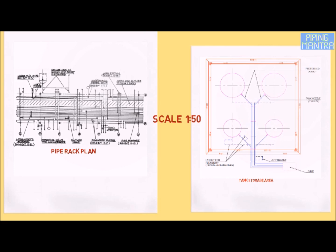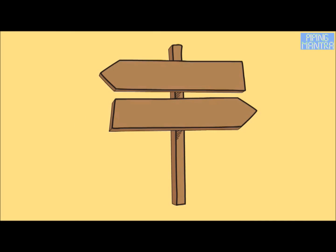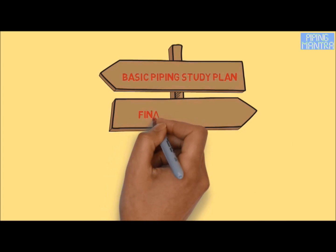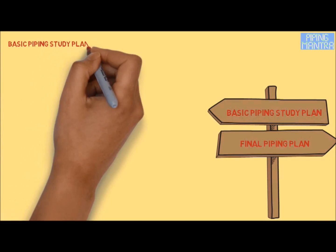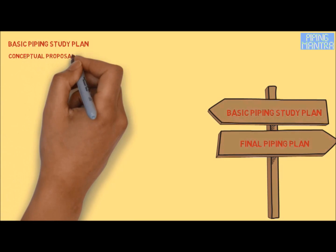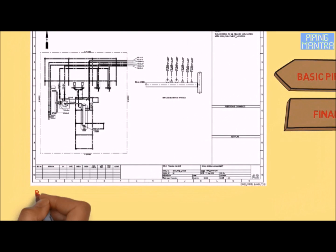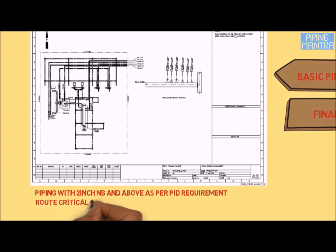Usually, flow-wise plans are made and local section views are given whenever elaboration is required. Normally piping plans are prepared in two stages: one is a basic piping study plan and another is the final piping plan. The basic piping study plan is a conceptual proposal with necessary sectional views, showing pipes of 2 inch and above as per the P&ID.